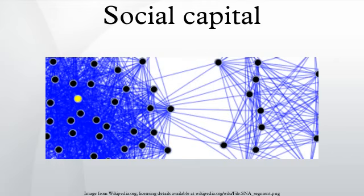In defining the concept, Hanifan contrasts social capital with material goods by defining it as: I do not refer to real estate or to personal property or to cold cash, but rather to that in life which tends to make these tangible substances count for most in the daily lives of people, namely good will, fellowship, mutual sympathy and social intercourse among a group of individuals and families who make up a social unity.